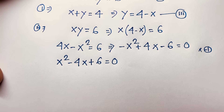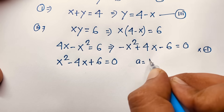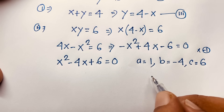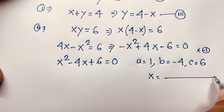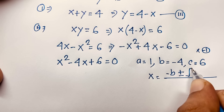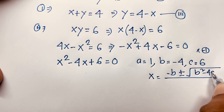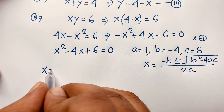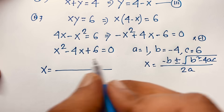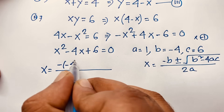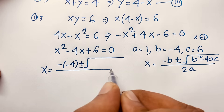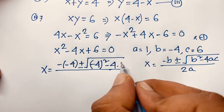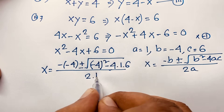We will find a nice quadratic equation where a is 1, b is negative 4, and c is 6. Then, using the quadratic formula x equals minus b plus or minus square root of b squared minus 4ac over 2a, I get: x equals minus(−4) plus or minus square root of (−4)² minus 4(1)(6) over 2(1).